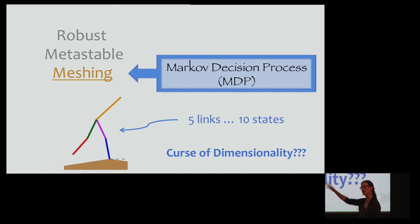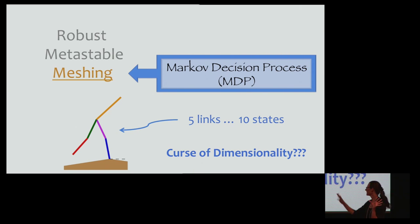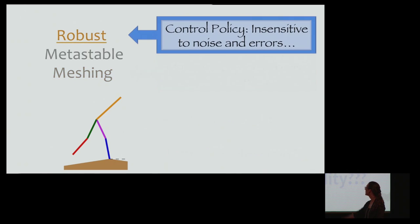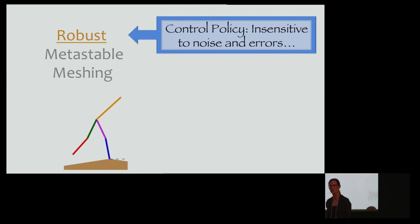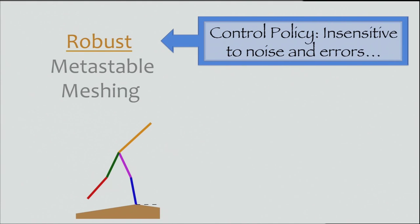Our walker has five links, so that is five position variables; each has a velocity, making ten states. We are able to deal with the curse of dimensionality by projecting things onto low-dimensional manifolds. The last aspect of our RSS paper is robustness: we want a control policy that is insensitive to noise — both being pushed around and having bad information about what's ahead. We also want to be insensitive to modeling errors, which we know are important because meshing is not an exact representation of the dynamics.